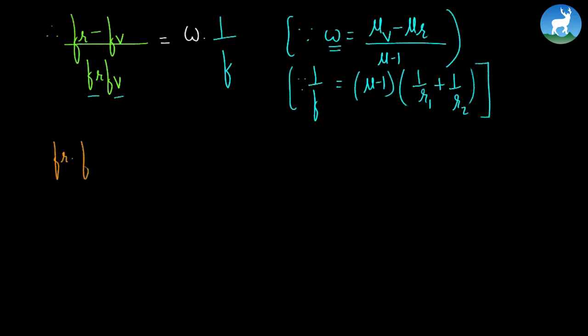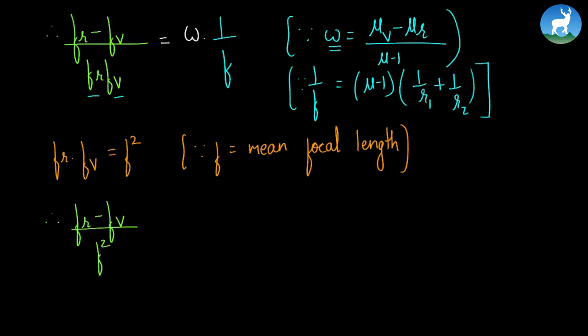The product fr × fv, we can approximate as f square, where f is the mean focal length. Therefore: (fr - fv)/f² = ω/f. Canceling f, we get: fr - fv = ω × f. So chromatic aberration equals fr - fv.